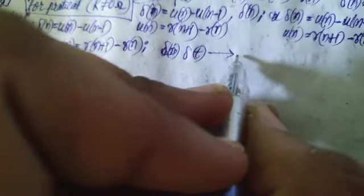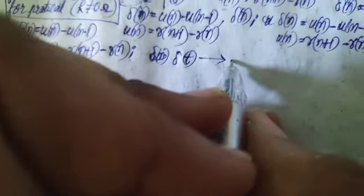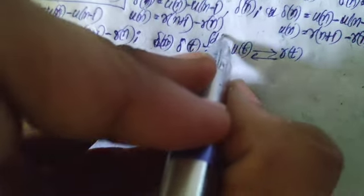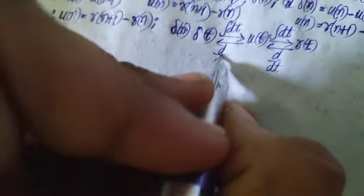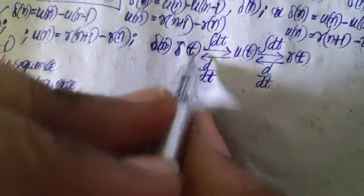Now, talking about δ(n) or δ(t) in the time domain — we can convert the impulse signal in the time domain. It can be converted to u(t) in the time domain, and u(t) can also be converted to the ramp signal, and vice versa. When you integrate with respect to time we get the unit step signal, and when you integrate again we get the ramp signal. When you take the derivative of the ramp signal we get the unit step signal.